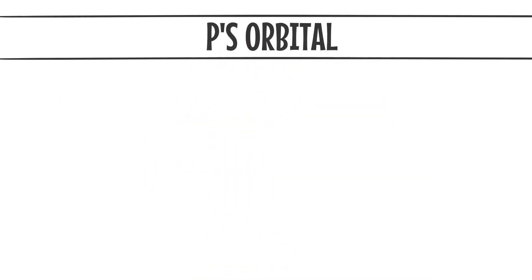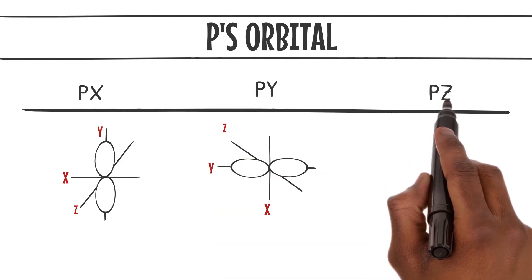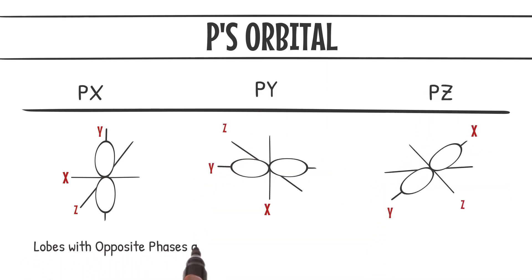The p orbitals come in three orientations: px, py, and pz. These orbitals have lobes with opposite phases and are aligned along the x, y, and z-axis, respectively.